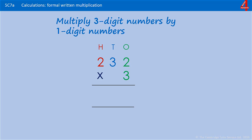232 multiplied by 3. Multiply the 3 by the 2 first, and that's 6. Multiply the 3 by the 30 — 3 times 3, that's 9, and because that 9 is in the tens column it represents 90. Now the 3 by 200 — 3 times 2 is 6, and because that 6 is in the hundreds column it represents 600. The answer is 696.